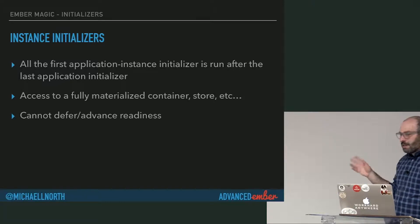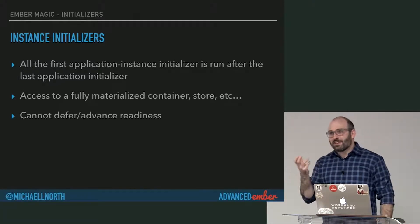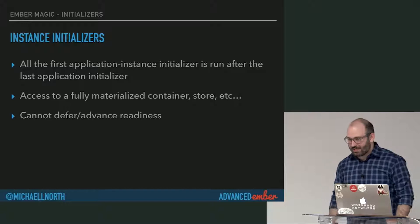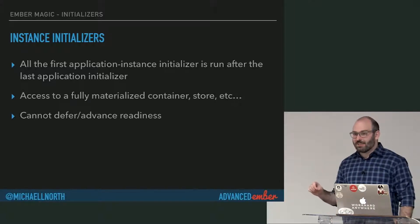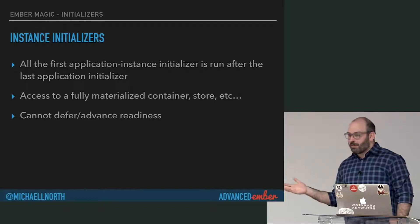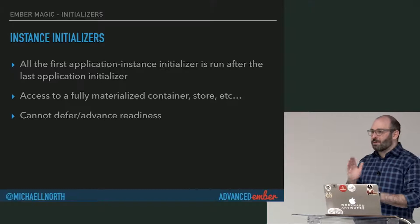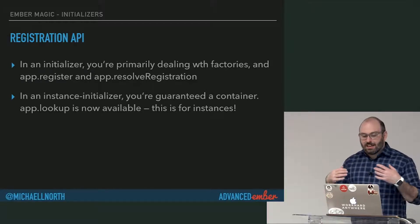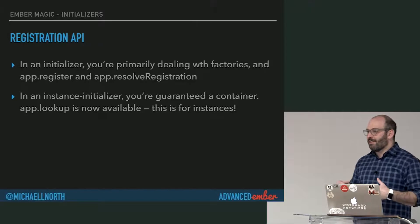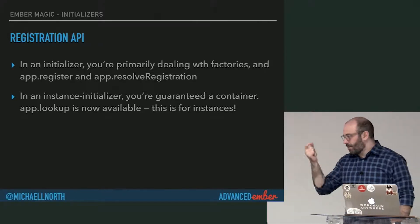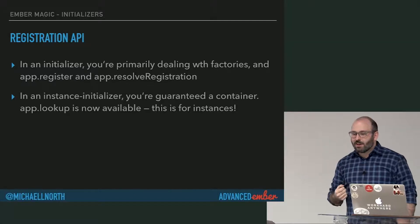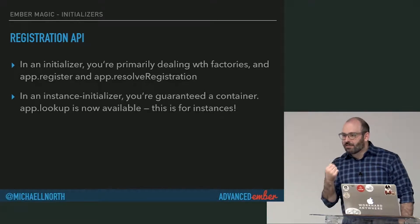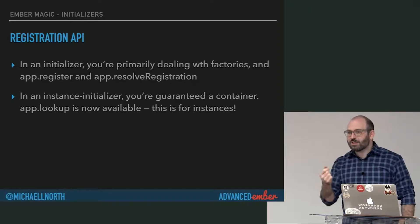This is a common point of confusion because there are many things you can do. The common confusion is: which of these two things do I choose for a particular task? There are many things that might work well in both. So I want to draw a line between what belongs in thing A and thing B. In initializers, you're really registering factories — taking an ES6 module and putting it in a particular place in a container. You're not working with instances; you're just registering factories.